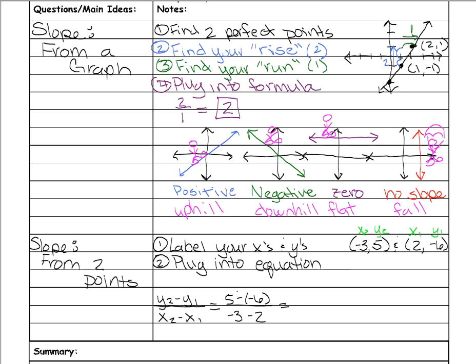My y2 is five minus my y1 is negative six. My x2 is negative three, and then my x1 is two. Now we need to simplify. Remember whenever you subtract a negative number, it's the same thing as adding. So five plus six is 11. And negative three minus two, you owe me three dollars and then you owe me another two, so now you owe me five dollars, which is negative 11 fifths as our slope.